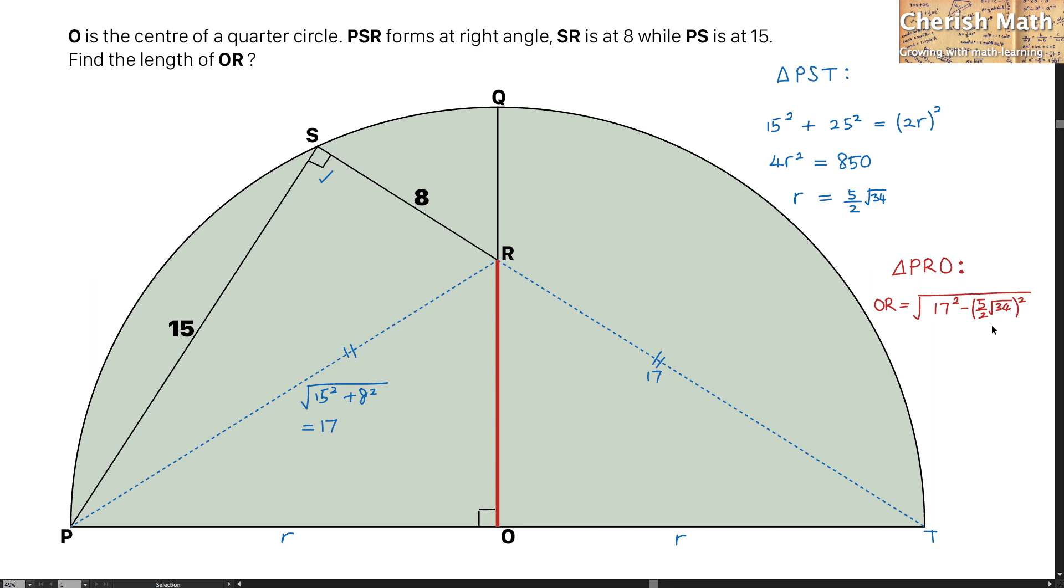This is the equation. And to simplify it, this is the value of OR, which is 3 over 2 multiplied by the square root of 34, and I solve the puzzle.